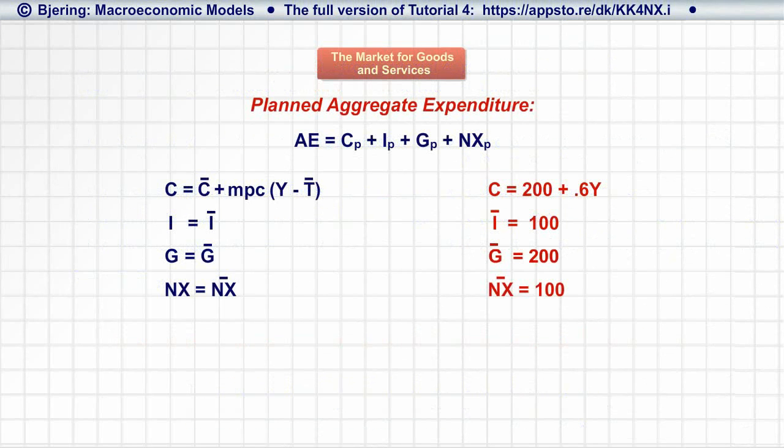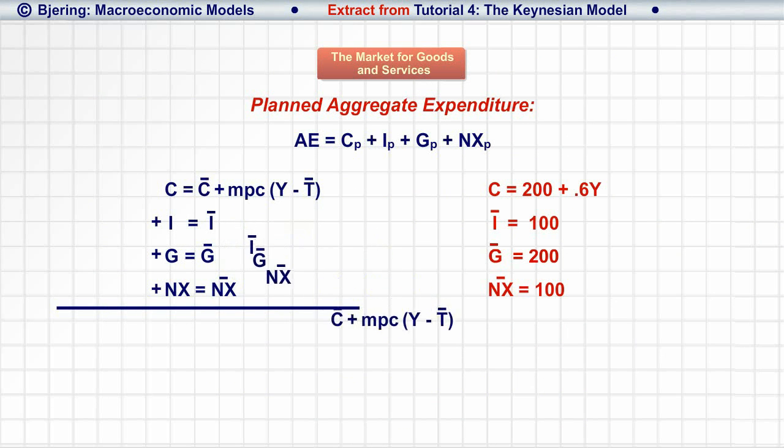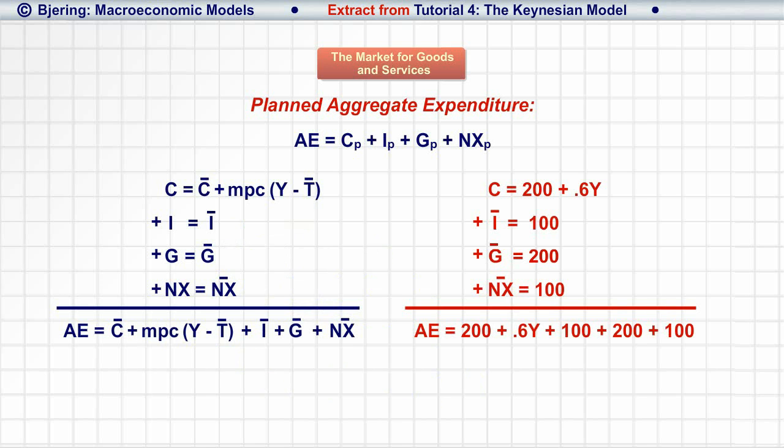The two groups of equations indicate how each of the four components of planned aggregate expenditure is determined in our model. Adding them up, we get the AE equation as the sum of the four equations.